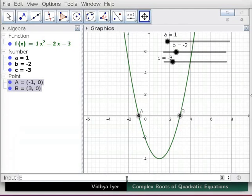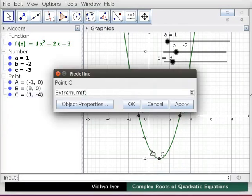In input bar, type extremum f in parenthesis and press enter. The minimum vertex appears in algebra and graphics views.